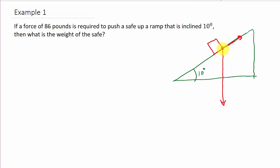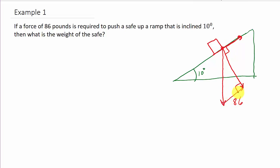We can bring this vector here — that's the force required to push it up the ramp. We can just project it down here. We know that this force is 86 pounds, and we know this is perpendicular, because this vector and this vector are parallel, and this line going through it is perpendicular to both vectors.